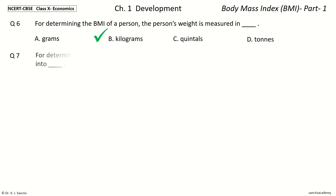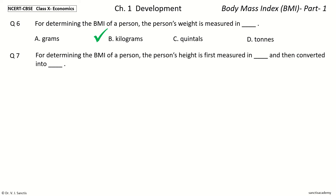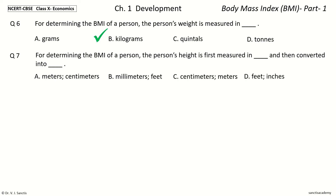Question 7: For determining the BMI of a person, the person's height is first measured in dash and then converted into dash. The options are: Meters, Centimeters, Millimeters, Feet, Centimeters, Meters, Feet, Inches. And the answer is: height is first measured in centimeters and then converted into meters.